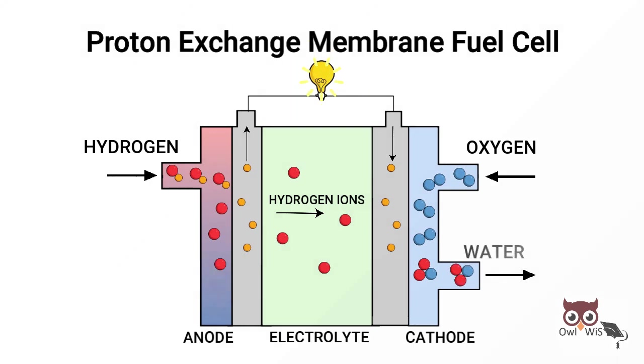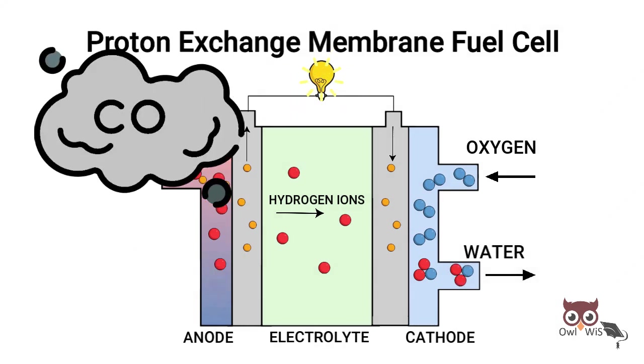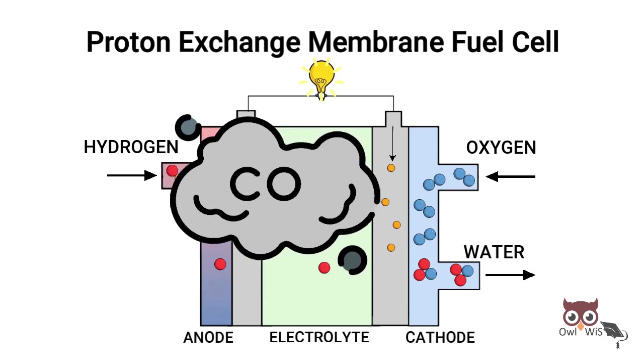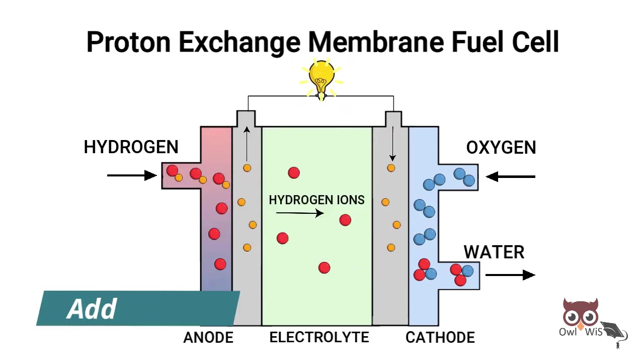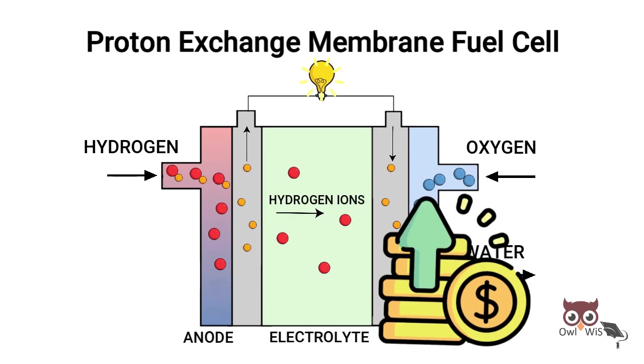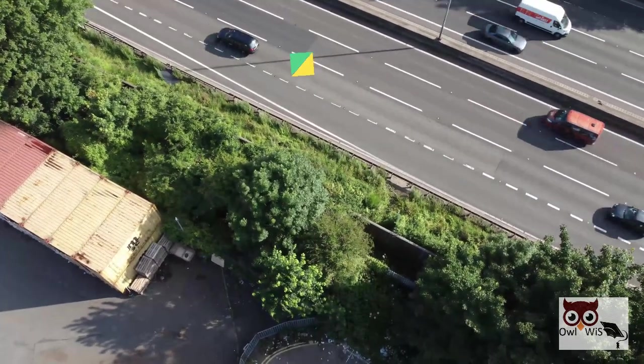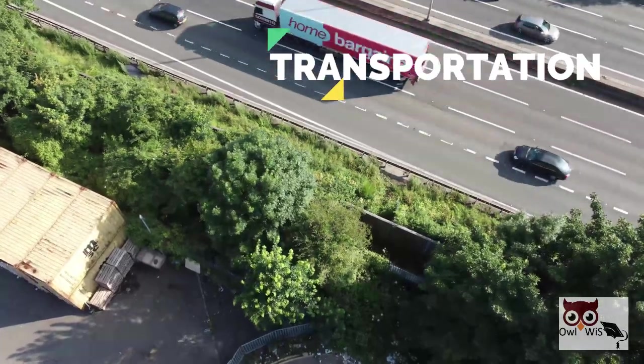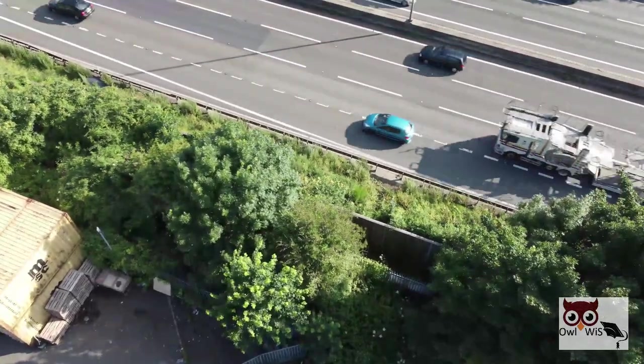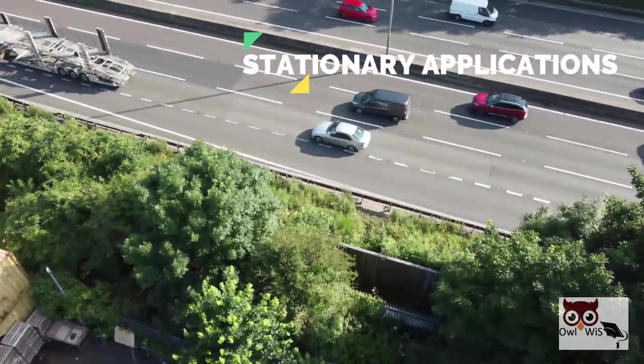The platinum catalyst is costly and extremely sensitive to carbon monoxide poisoning, making it necessary to employ an additional reactor, which also adds cost. PEM fuel cells are primarily used in transportation applications such as cars, buses and heavy-duty trucks, and in some stationary applications.